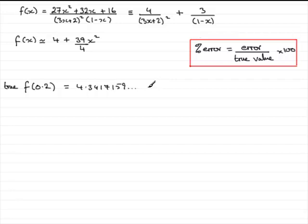Now we need to work out the approximate value or the estimated value of f of 0.2 and that was obtained by this equation from the binomial expansion and if we put that in there we can get the approximate value of f of 0.2. Substitute 0.2 for that x there and what you should find you get is 4.39 exactly.